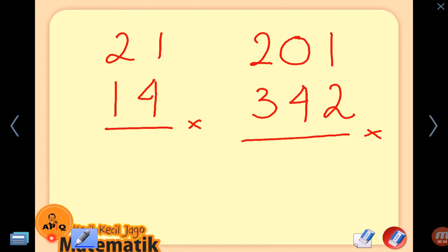First step: 1 multiplied by 4, 1 times 4 is 4. Second step: 2 times 4 is 8, 1 times 1 is 1, 8 plus 1, we get 9. And the last step: 2 times 1, 2 times 1 is 2. It's done: 294.